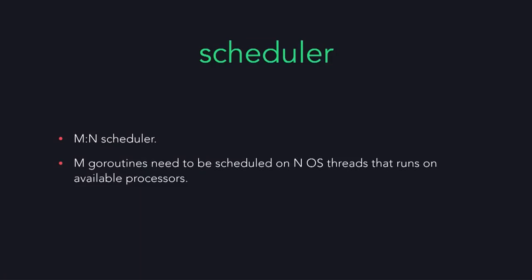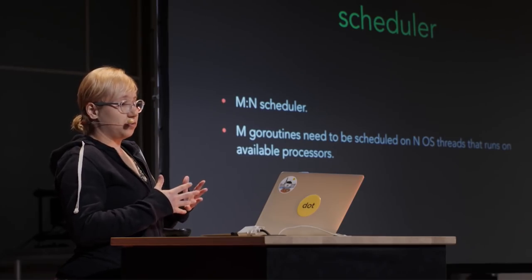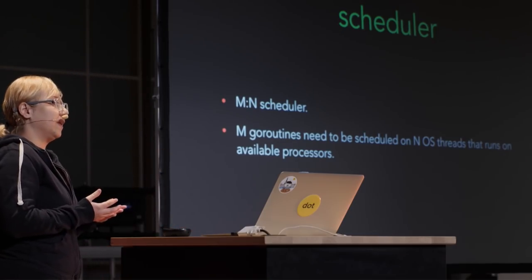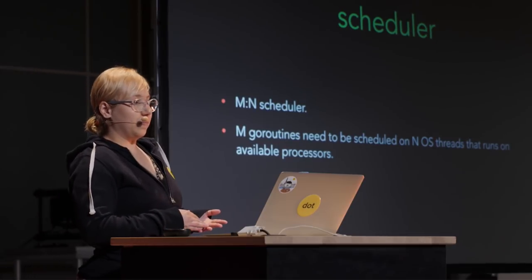Go has an M:N scheduler. What it does is distribute M Go routines over N OS threads. Since OS threads are quite expensive to create, start, and stop, we utilize a small number of OS threads to run a large number of Go routines. We still need to figure out which Go routines should run at any time, given we have a smaller pool of OS threads. It's also worth noting that Go can scale up to multiple processors — multiple cores running a small pool of OS threads to run all existing Go routines.